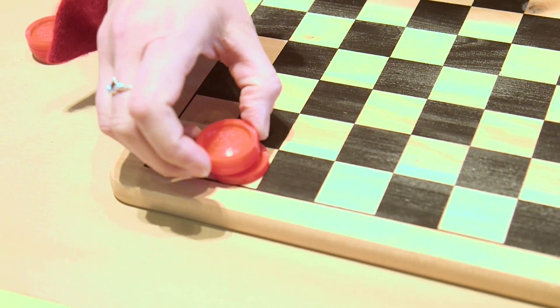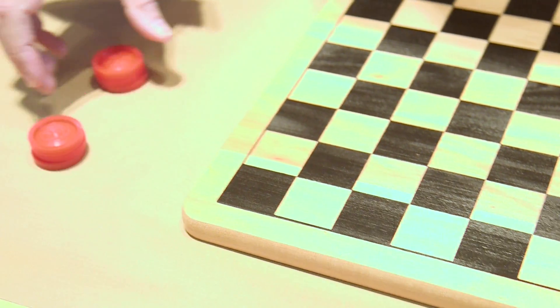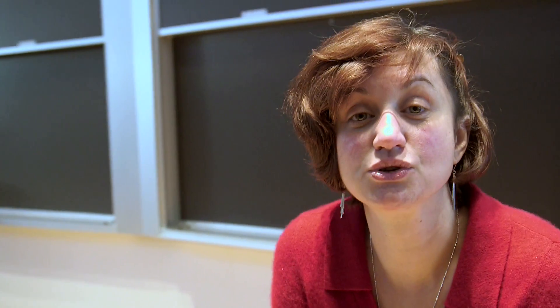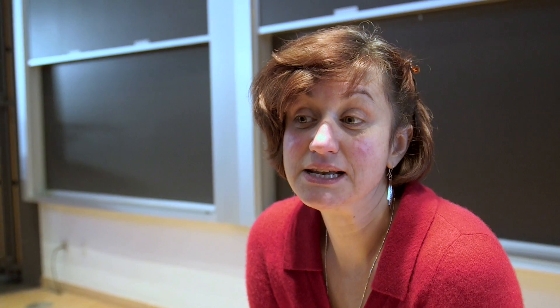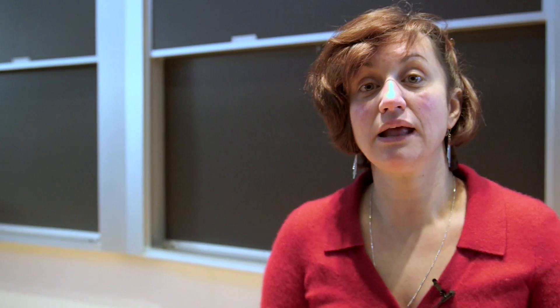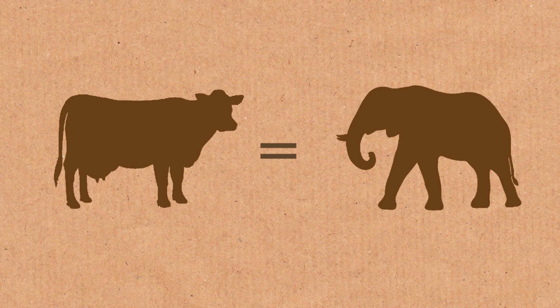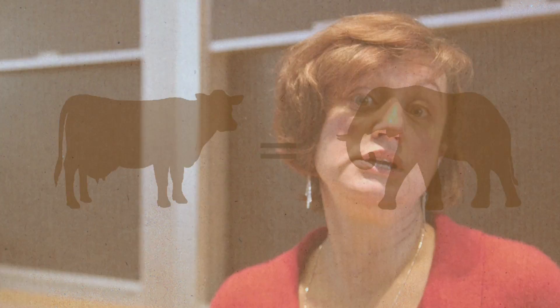Mathematicians when they attack a problem like this — showing that something is impossible — they start by a contradiction. They basically assume it is possible, and then after some logical argument they end up with something ridiculous, like 1 is equal to 0, or maybe a cow is the same as an elephant. Things that everyone will agree are ridiculous, and therefore the assumption that led to this contradiction must be faulty.